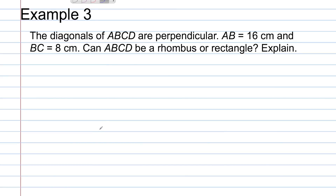Example 3: the diagonals of quadrilateral ABCD are perpendicular. The length of side AB is 16 centimeters and the length of side BC is 8 centimeters. Can quadrilateral ABCD be a rhombus or a rectangle? To approach this, take the information given and determine if it fits the theorems or properties of either a rhombus or a rectangle. Because the diagonals are perpendicular, of the two special parallelograms — rhombus or rectangle — it would have to be a rhombus. If the diagonals of a parallelogram are perpendicular, then it's a rhombus.